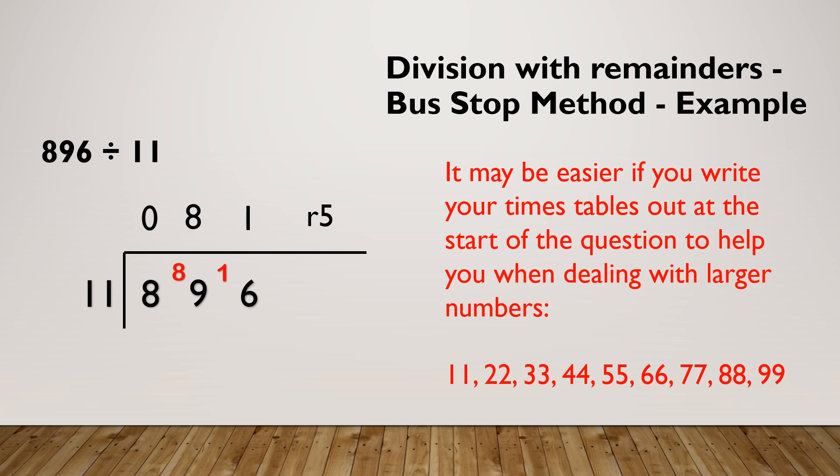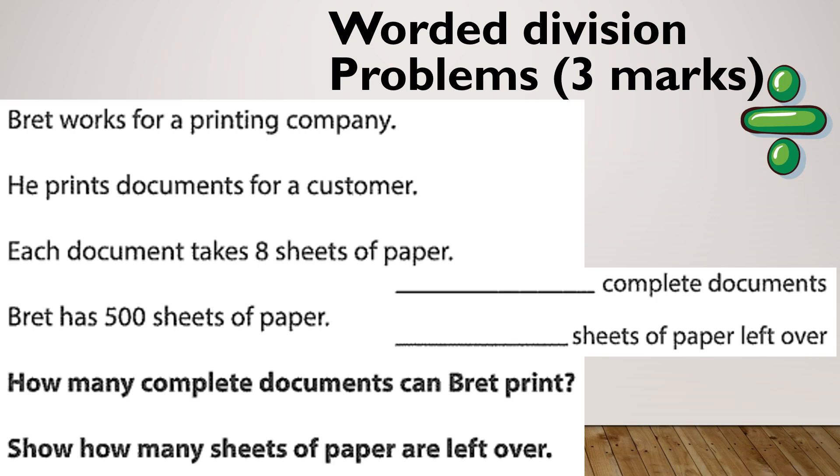Let's see what this is going to look like in an exam situation. Brett works for a printing company. He prints documents for a customer. Each document takes 8 sheets of paper. Brett has 500 sheets of paper. How many completed documents can Brett print and how many are left over? You can always be able to tell it's a division because you'll have a completed and left over thing on your answer. Pause the video, give this one a go and see how you get on.